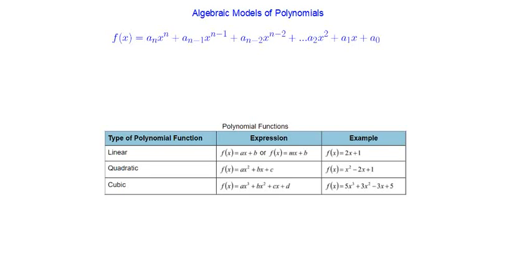In this video we'll look at algebraic models of polynomial functions. The technical definition for a polynomial function is a function that looks like this. A polynomial function could be made up of multiple terms, where the terms are separated by plus or minus signs.